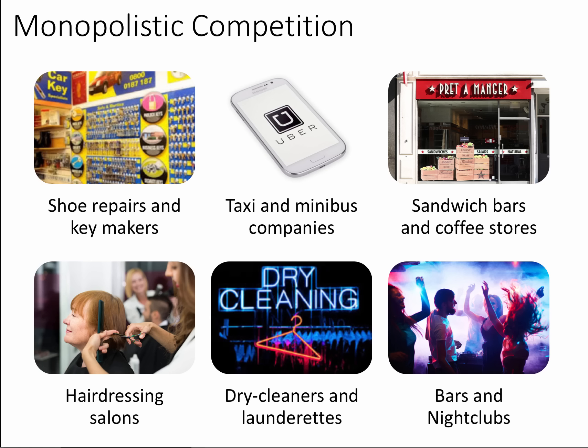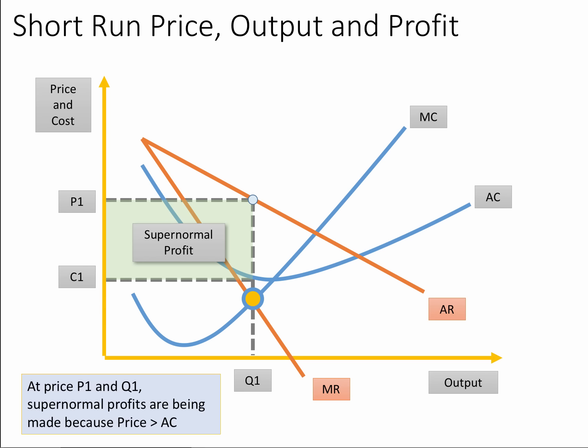Monopolistic competition is a close neighbour of perfect competition. Here we have many firms with no significant barriers to entry, but each firm is producing a slightly differentiated product or service — typically many dry cleaners or hairdressing salons in a particular town offering a differentiated product. In monopolistic competition, firms can earn any level of profit in the short run. In our diagram, the firm operates at output Q1 and makes supernormal profits because price is greater than average cost.